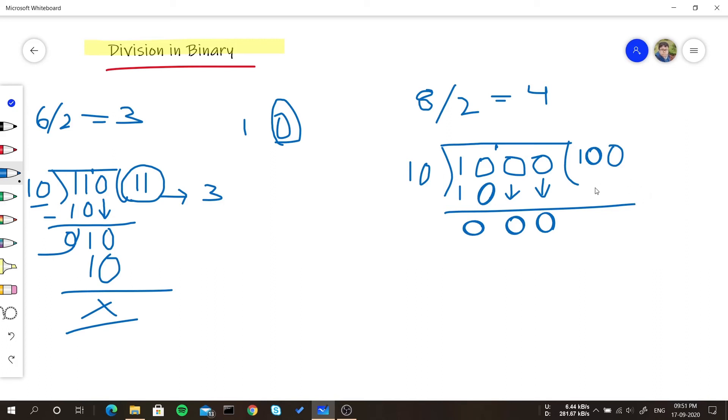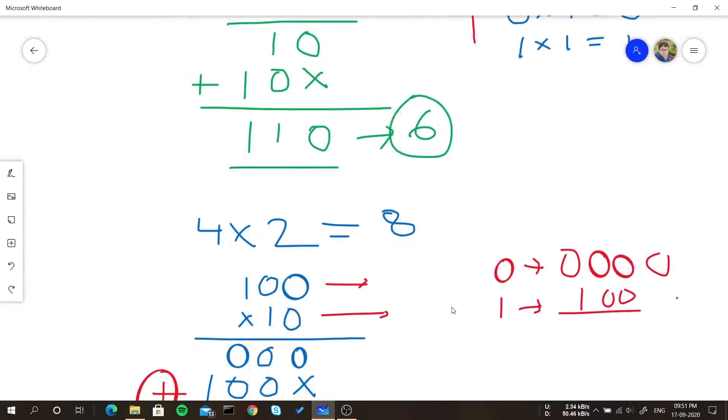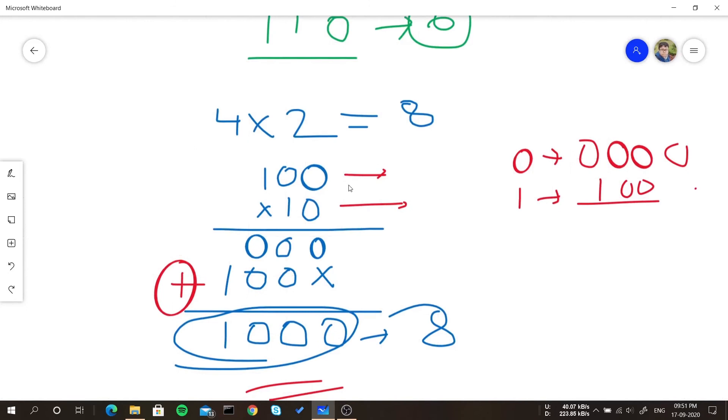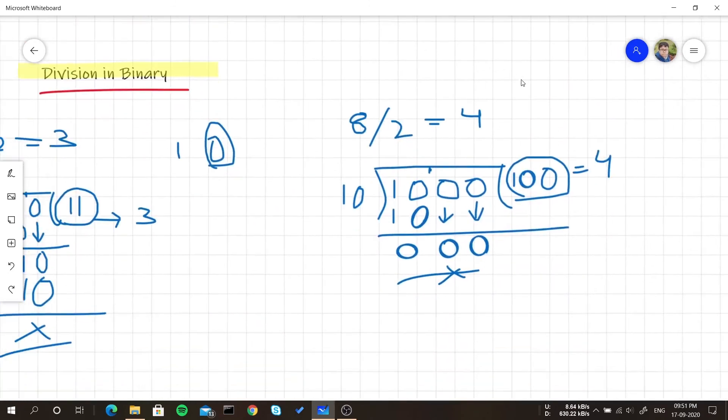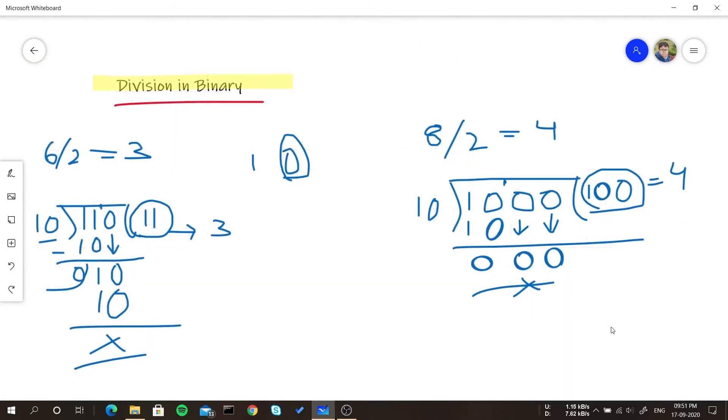So this is the result and it completes here perfectly. So the result is 100 and 100 should be equal to 4. Let's just check, yes 4 is 100. So yeah this is how the division part is done. So 1 and 0 will be multiplied.